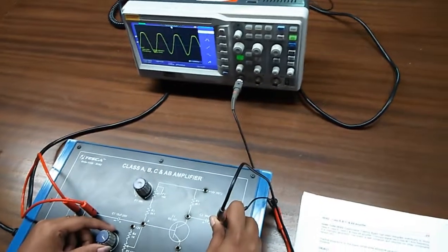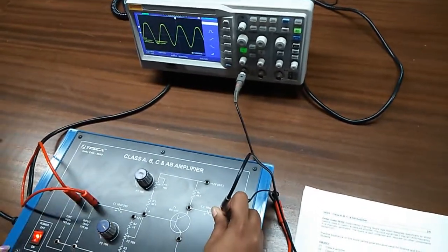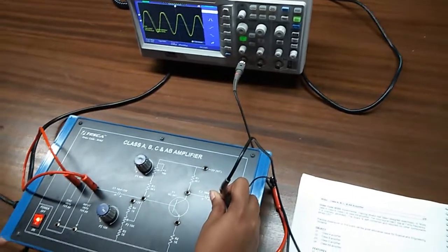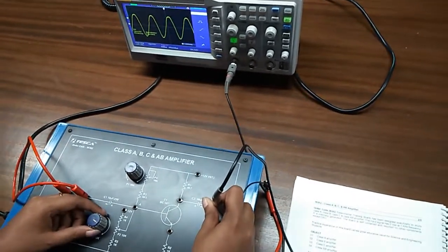This is the output waveform for class A amplifier. Now, by varying this potentiometer...